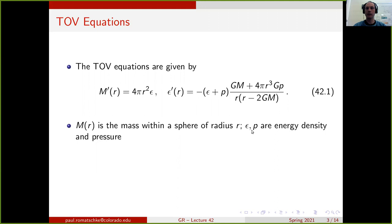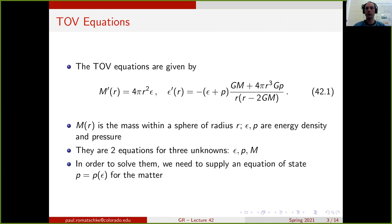Energy density is denoted by epsilon, and the pressure is denoted by p. There are two equations for three unknowns: epsilon, p, and m. So we need another equation to close the system. That equation has to be a property of the matter the star is made of. This equation of state comes in the form p = p(epsilon), and can be used to close the system and get a solution for the star's structure in general relativity.